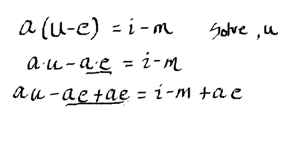So that's going to cause that to cancel out to zero. And so we're going to be left with a times u is equal to i minus m plus a times e.